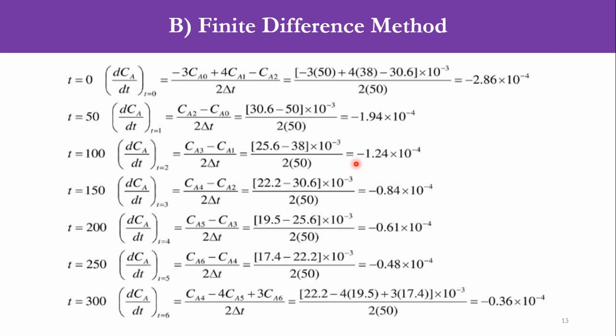So now we will go to the numerical method to see how it can be solved. We had seen it practically previously but now we will be solving it. For time t=0, (dC/dt)_{t=0} = (-3CA0 + 4CA1 - CA2)/(2Δt). It has been said that the independent variable will be equally spaced, meaning the Δt for all these points will be same which is 50. Now CA0 is 50, CA1 is 38, CA2 is 30.6, but all these are 10^-3 as we have seen earlier, so the answer will be -2.86×10^-4.